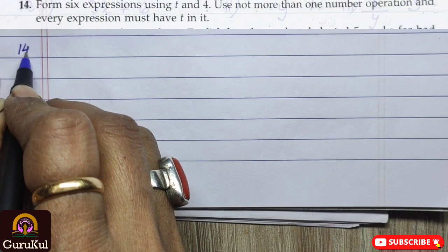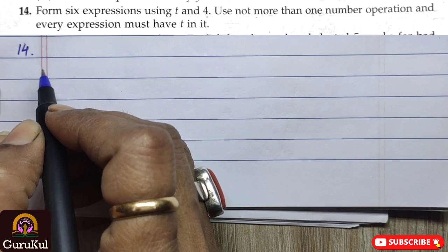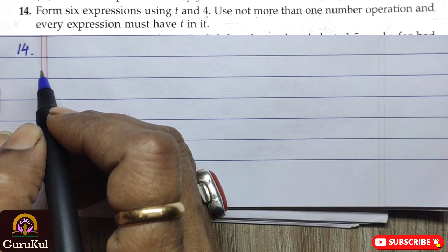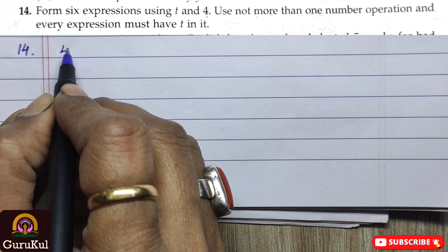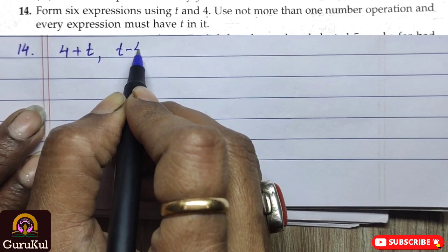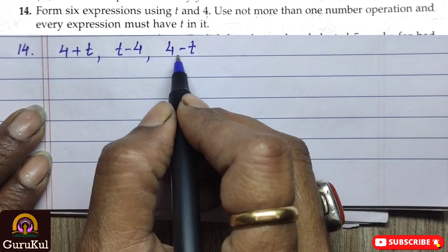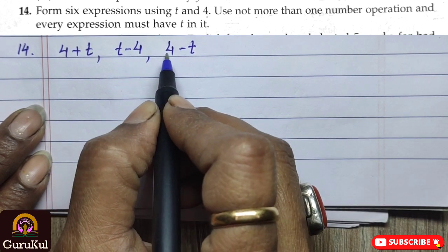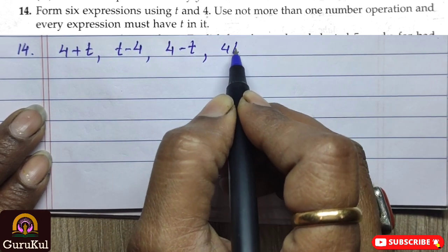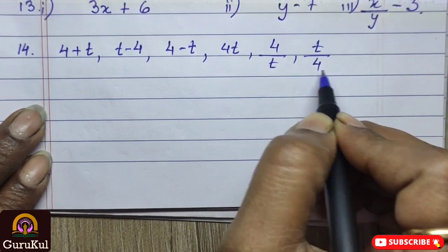Question number 14. It says, form 6 expressions using t and 4. Use not more than one number operation and every expression must have t in it. So, let me begin. 4 plus t. First expression. What is the difference? As you can see, this is minus 4 and this is plus 4. This is plus t and this is minus t. Next, we can write it as 4t, 4 by t, t by 4.